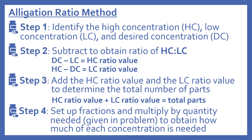Step two: we'll subtract to obtain the ratio of HC to LC. The desired concentration minus the low concentration will give us the high concentration ratio value. Then the high concentration minus the desired concentration will give us the low concentration ratio value. Step three: we'll add the HC ratio value and the LC ratio value to determine the total number of parts. And step four: we're going to set up fractions and multiply by the quantity needed — given in the problem — to obtain how much of each concentration is needed.